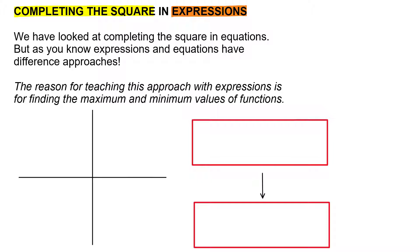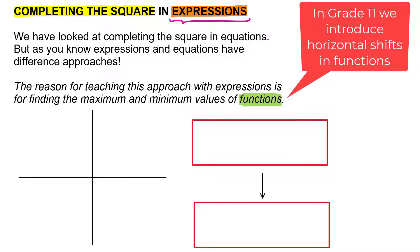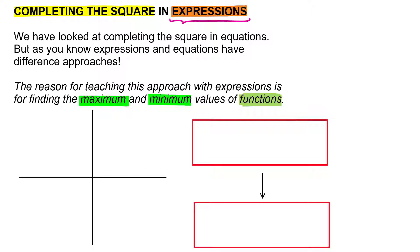You might ask yourself why it's important to know how to do this with expressions. Well, to answer that you've just got to think back to functions. In grade 11, with the different shifts and the different ways that we move functions around, we've got to figure out ways of identifying different parts of those functions — and one of those new parts is the maximum or the minimum. To do that we'll have to use this technique of completing the square in an expression.